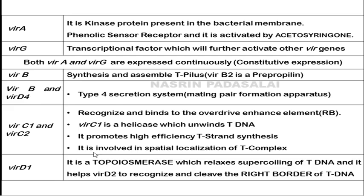VirA is a kinase protein present in the membrane of bacteria acting as a phenolic sensor receptor, activated by sensing the phenolic compound acetyl syringone secreted by the plant. VirG is a transcription factor that further activates the other vir genes present in the Ti plasmid. Both VirA and VirG are expressed continuously — this is called constitutive expression.